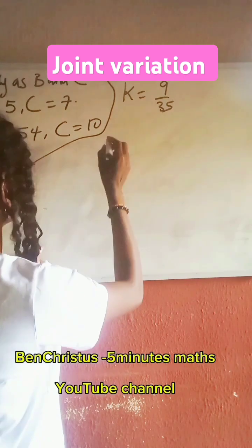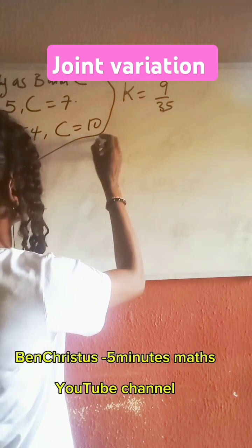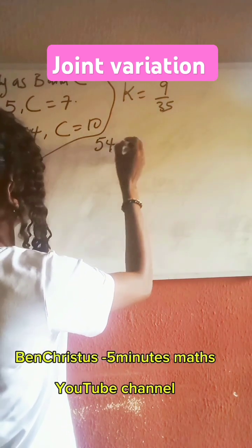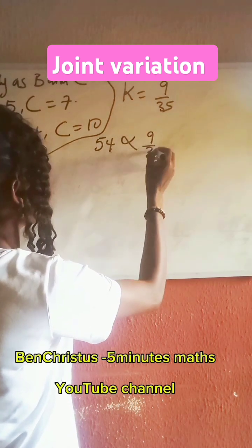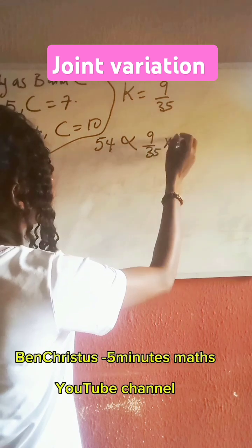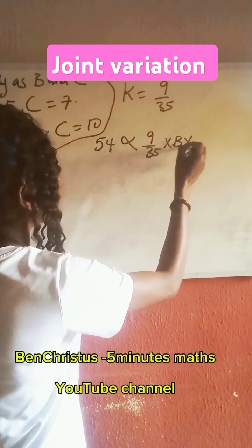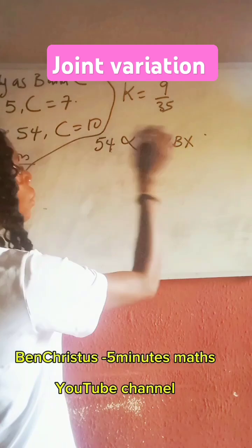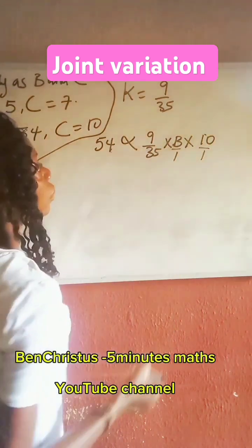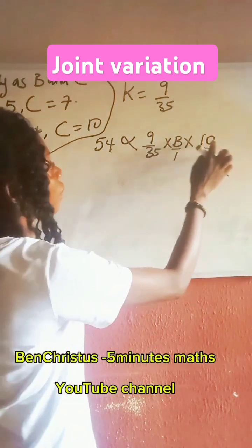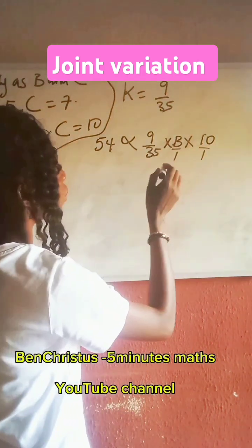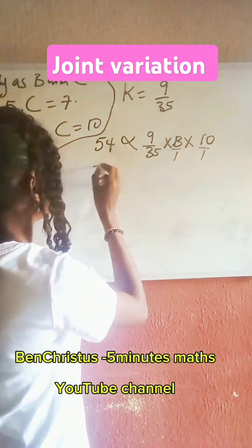So we have to find when A is 54, it will vary as 9 over 35 multiplied by B multiplied by C. And our C is 10. So this will multiply out. 9 times B times 10 gives us 90B. We have 54.